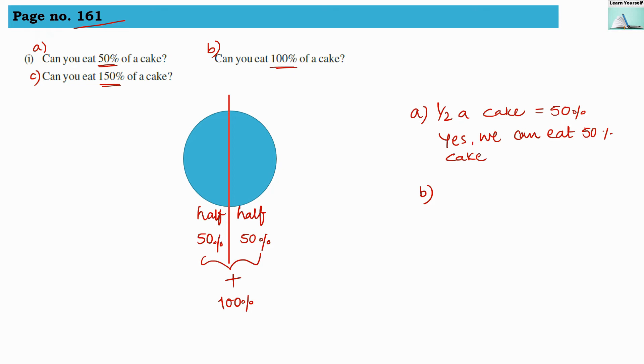Any quantities are there. When you are finishing the whole quantity, that means you are eating 100% of that quantity. Full cake is going to be 100%. So yes, we can eat 100% of a cake.